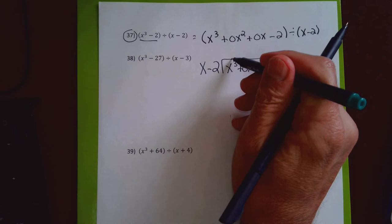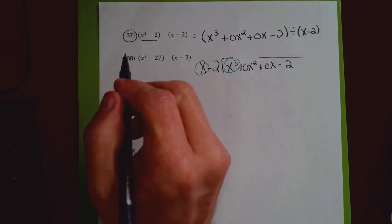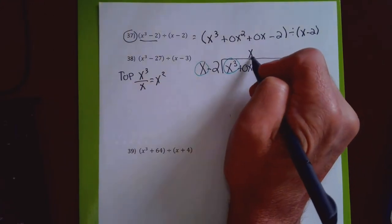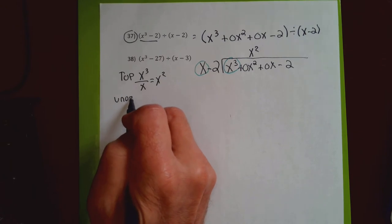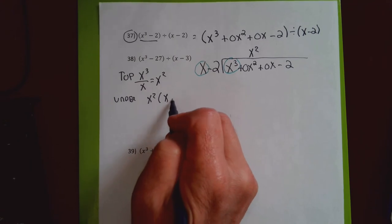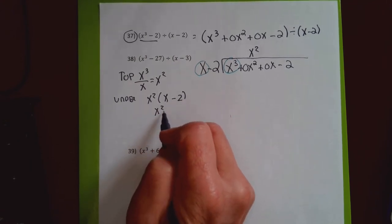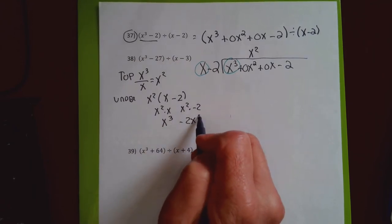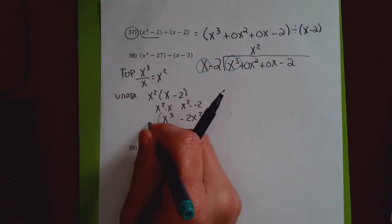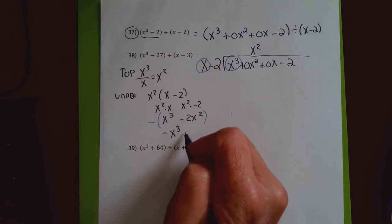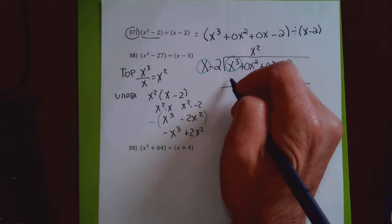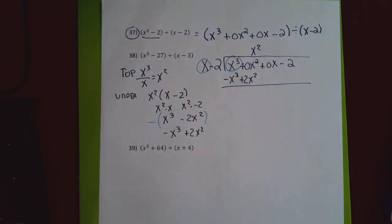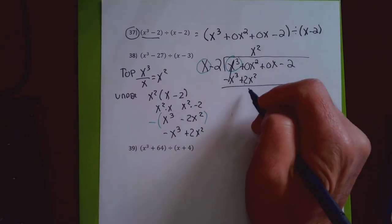For the first step on top, I do x cubed over x and that gives me x squared, lined up under the 0x squared. Then I take x squared and multiply it by x minus 2: x squared times x gives x cubed, x squared times minus 2 gives minus 2x squared. I find the opposite to subtract: negative x cubed and positive 2x squared go under my division bar. The x cubes cancel; 0x squared plus 2x squared is 2x squared. I bring down the 0x and minus 2.